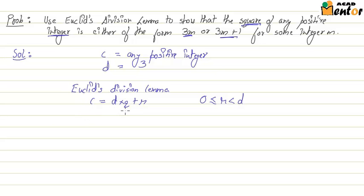We know that d is 3, so c becomes 3q plus r. Now remember, r is greater than or equal to 0 but less than 3, which implies that r can be of the value either 0, 1, or 2. Only three possibilities are there.